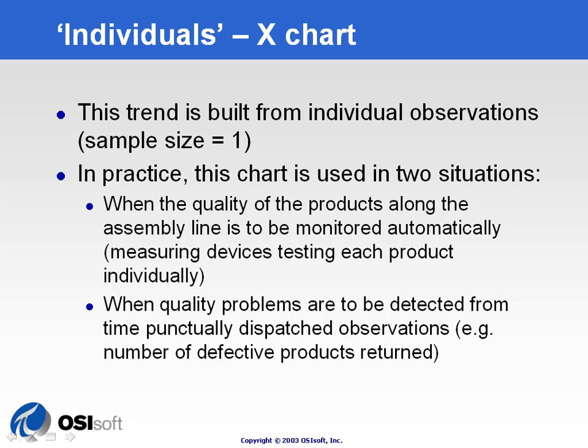The first situation is whenever we have discrete manufacturing and you want to assess the quality of each and every product along the line, so you need to plot all of them. The second is whenever you have very few observations taken from the population, so you also need to take all individual values to get as much data as possible. There is no way to aggregate the data because sampling would be too small or you would wait too long to get meaningful values in your SQC trend.